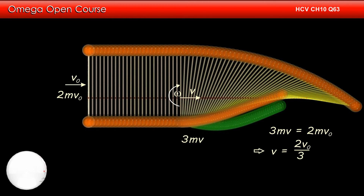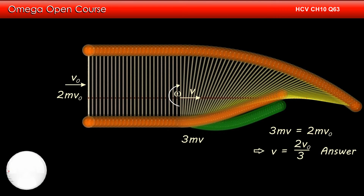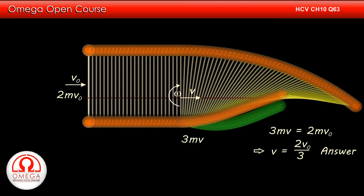As there is no external force, the velocity of the center of mass before the collision must also be equal to 2V0/3. So the velocity of the center of mass both before and after the collision is 2V0/3. This is the answer to part B of the question.